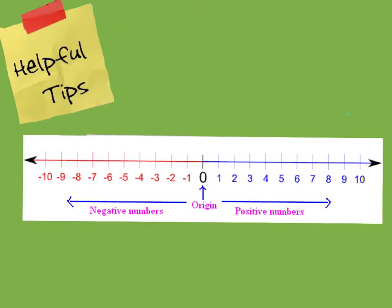Now let's look at an actual number line. The first thing I always do is find where zero is and check that the spaces are the same distance apart. Going to the right, numbers are getting bigger and they are all positive. To the left of zero, they all have negative symbols — anything to the left is negative, and as I go farther down the line the number gets bigger but is actually farther away from zero.